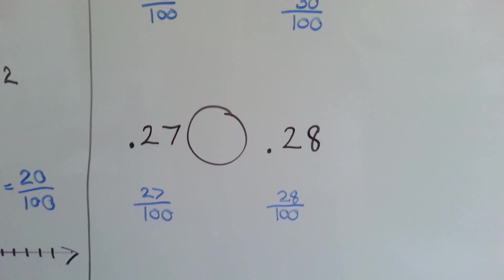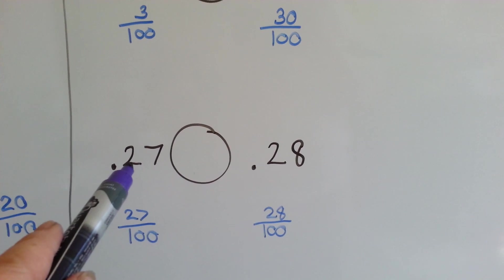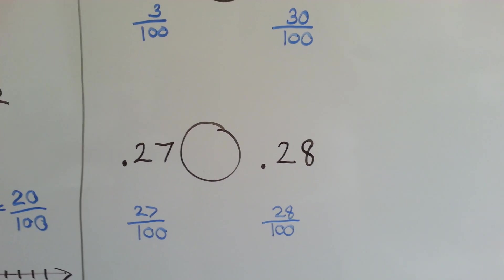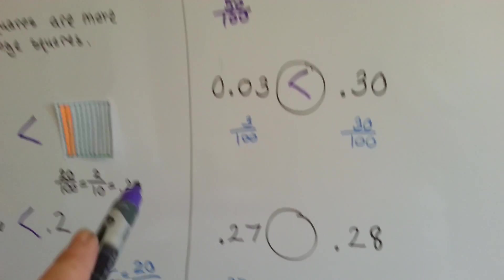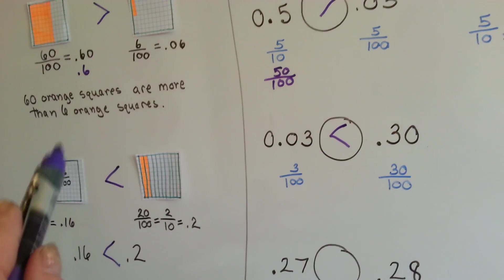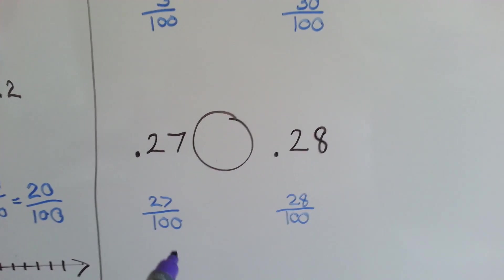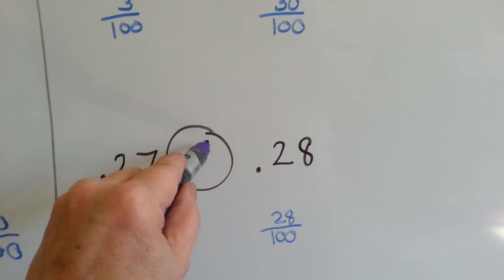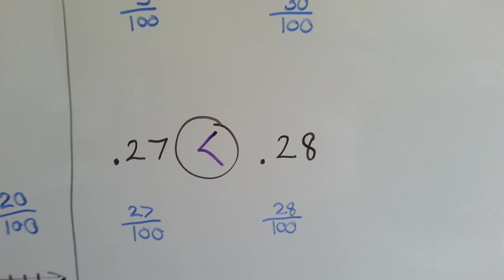How about this one? Is twenty-seven one-hundredths bigger, or twenty-eight one-hundredths bigger? Think of the little orange squares being filled in — twenty-eight of them filled in, or twenty-seven of them filled in. Twenty-eight is more than twenty-seven.